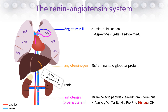As it circulates around the body, angiotensin 2 has some powerful effects that cause hypertension. The ACE inhibitors stop ACE from cleaving angiotensin 1 to angiotensin 2 and therefore prevent its hypertensive action. So, how does angiotensin 2 cause hypertension and why does blocking ACE prevent this?